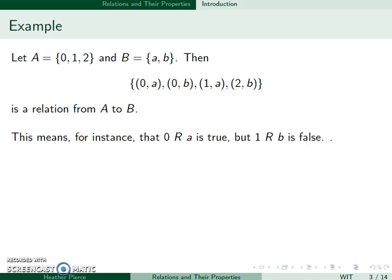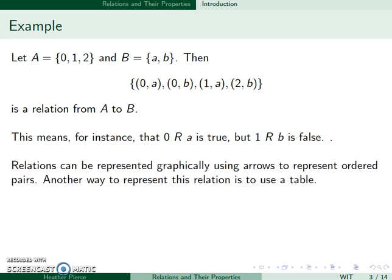So for instance, 0 is related to A. However, 1 is not related to B since the point 1B is not in here. And for now, we'll look at two different ways to represent relations, using arrows and using a table.